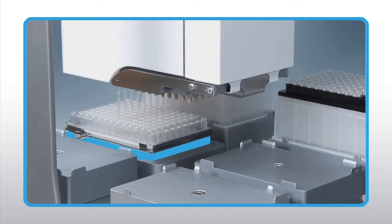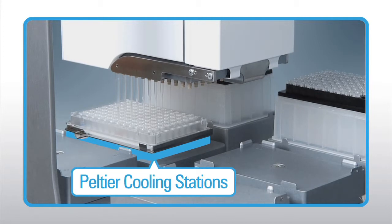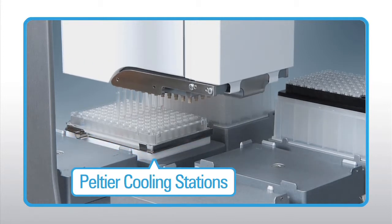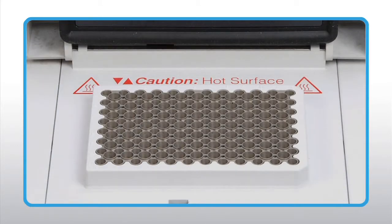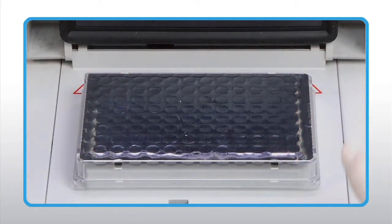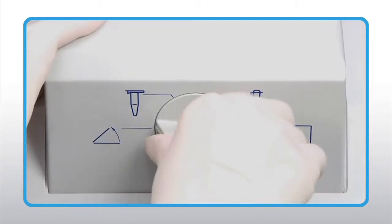The Bravo platform is equipped with Peltier cooling stations to ensure best performance of enzymes and other reagents. A PCR machine is used for all incubations including restriction digestion, incubation with random primer, labeling, and pre-hybridization.